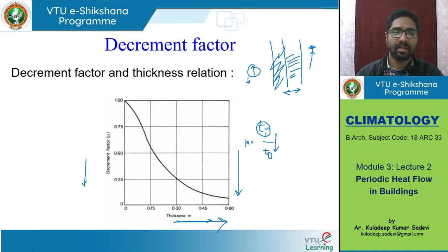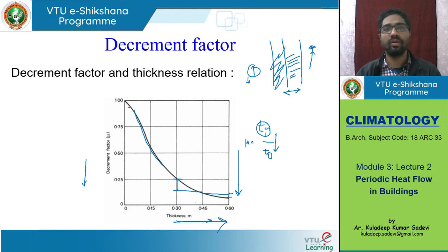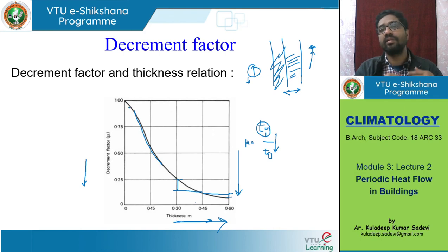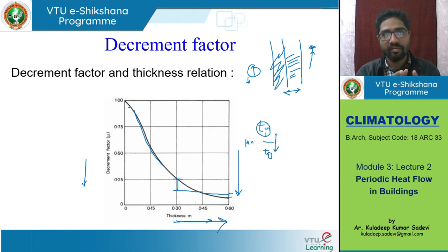Another important point: once we start adding up the thickness of the wall, the decrement factor reduces exponentially very quickly at first, but after some point — around 0.45 to 0.6 meters — the rate of change for each additional 0.15 meters is not that much. More thickness you keep adding, the effect on the decrement factor is not going to be as high. In the initial range from a thin wall to a much thicker wall, the decrement factor changes drastically, but if the wall is already very thick, adding more thickness doesn't give much change in decrement factor. The change is much higher at lower thicknesses.